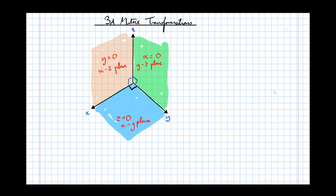If the diagram is at all unclear, imagine there's a room with two walls — one wall there, one wall there — and a floor. Drawing a man standing in the room hopefully helps you visualise what the diagram means. Now moving on to the different types of transformation we'll be expected to look at in 3D, starting with reflections.